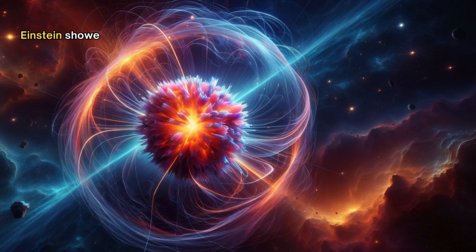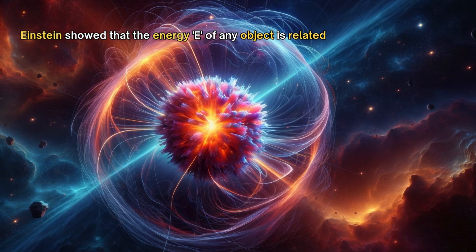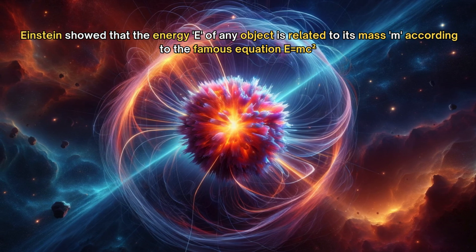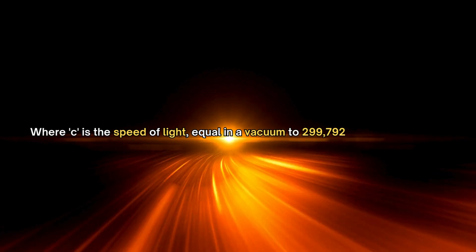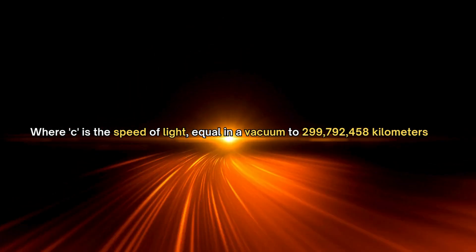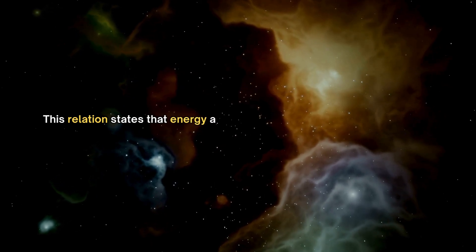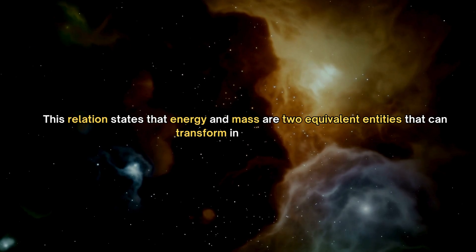Einstein showed that the energy E of any object is related to its mass M, according to the famous equation E=MC², where C is the speed of light, equal in a vacuum to 299,792,458 km per second. This relation states that energy and mass are two equivalent entities that can transform into each other.